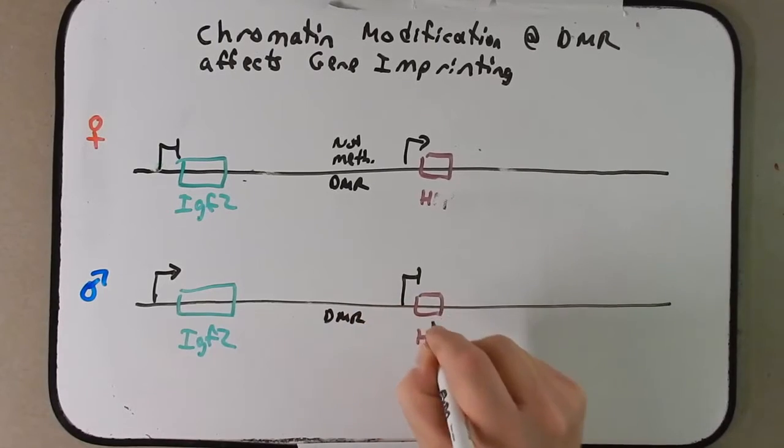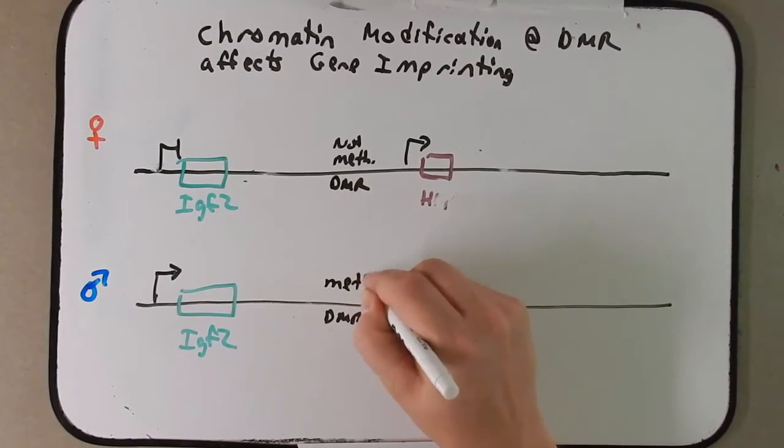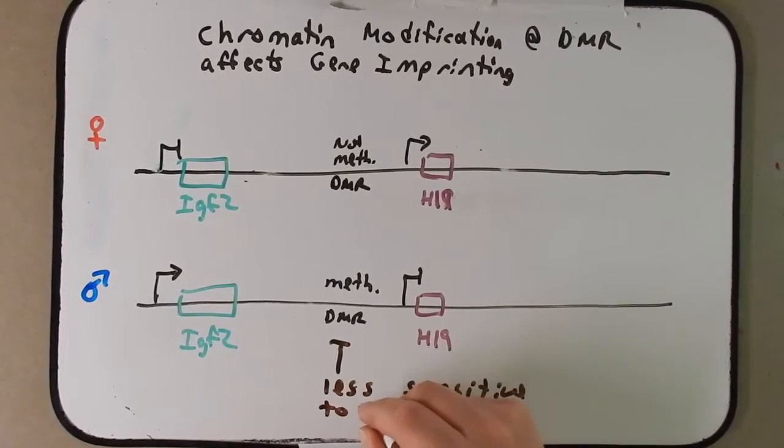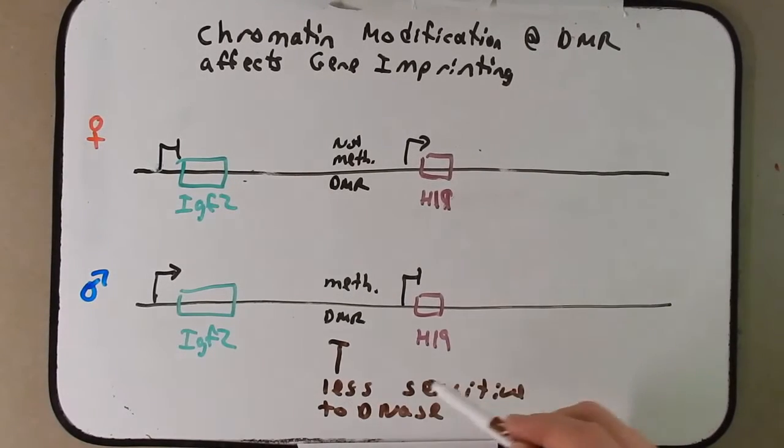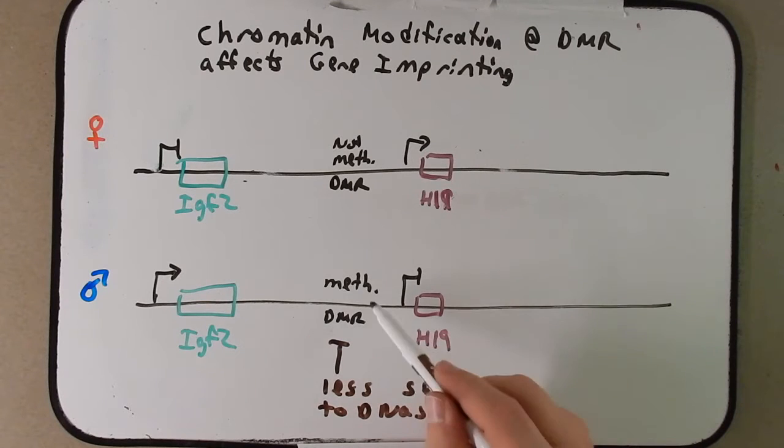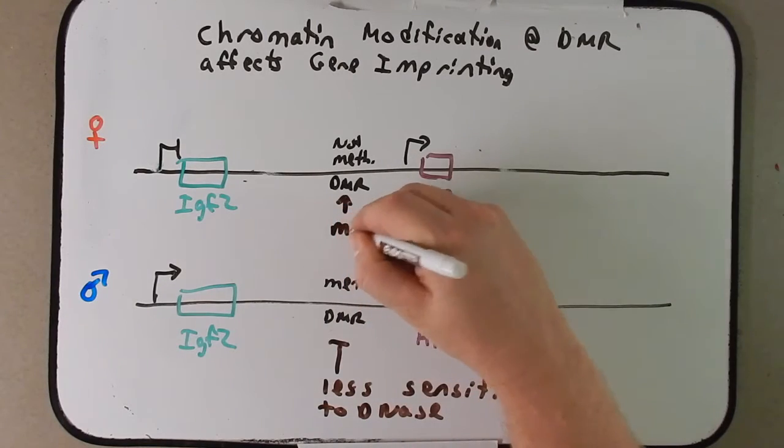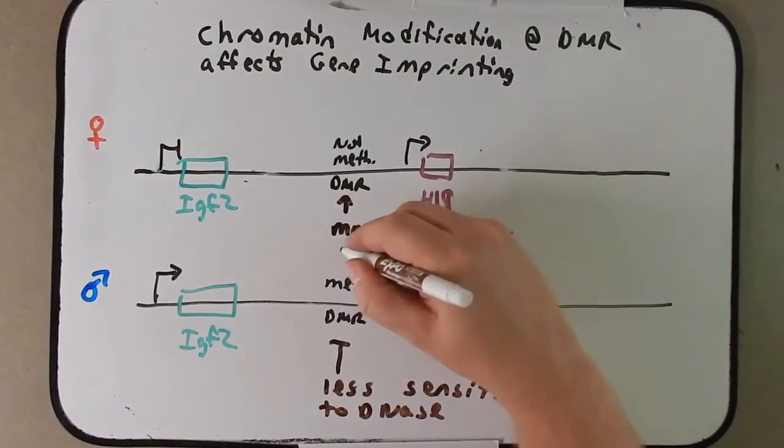We know that this region here in the paternal copy is more compacted, and because of that it's less sensitive to DNase. If we isolate this DNA and we expose it to the DNA degrading enzyme DNase, this area is not degraded because one would predict the methyl groups here recruit heterochromatin material and form the heterochromatin and protect it from DNase. Up here, this region between IGF2 and H19 that's not methylated, it is more sensitive to DNase because it's not protected by methylation and heterochromatin.